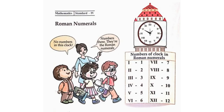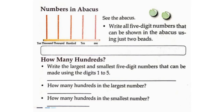Roman numerals: There are no ordinary numbers on this clock — they are Roman numerals. Numbers on the clock in Roman numerals: I, II, III, IV, V, VI, VII, VIII, IX, X, XI, XII. Numbers in Abacus: Write all five-digit numbers that can be shown using just two beads — 20,000; 11,000; 10,100; 10,010; 10,001.